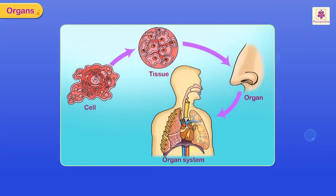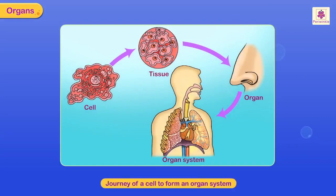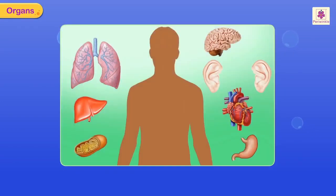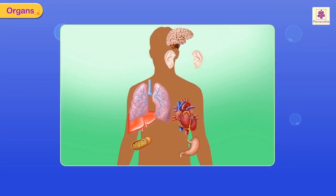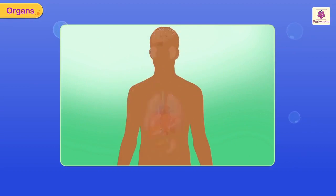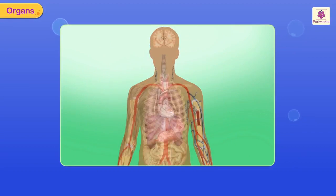Look at this diagram showing the journey of a cell to form an organ system. Now let's look at the organ systems in our body and how these systems function.